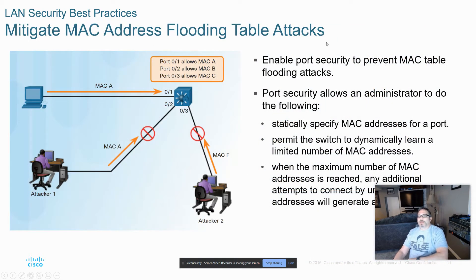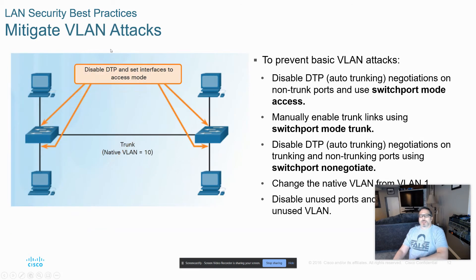With our MAC address flooding, if we set up port security — especially to a limit of one MAC — then that would be the only MAC permitted on that port. All the additional MACs generated by an attack tool would cause the port to go into violation mode. For VLAN attacks, we're going to disable DTP, static our trunk ports, static our access ports, set DTP to no-negotiate per interface, and place all unused ports into a black hole VLAN, static them to access, and then disable them.